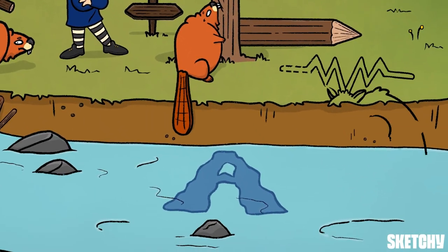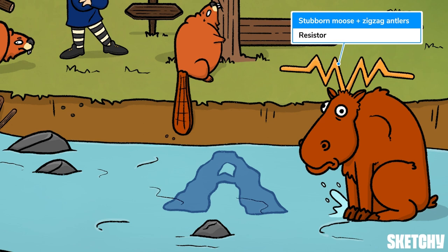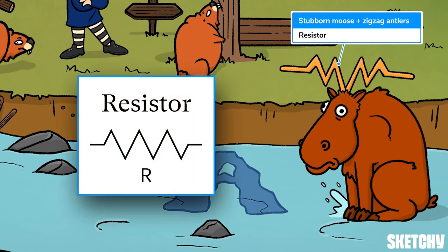While our guru looks comfortable with his surroundings, someone else has made himself right at ohm in the middle of the river current. This moose and his zigzag antlers resisting getting out of the way represent a resistor — a common circuit element made of a material with a resistivity intermediate between a conductor and an insulator, through which electric current flows. The zigzag shape of the moose's antlers reminds you of the common symbol for a resistor used in circuit diagrams.